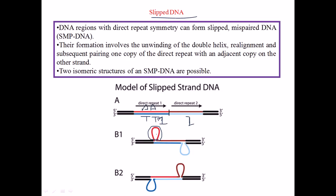This is called slipped DNA because parts of the DNA sequence are being looped out — they get slipped at the time of bond formation. That is why they are called slipped DNA. Similarly, some region at another point can be slipped and form a bulge-out structure like a balloon, while the rest of the strand is still able to form bonds.